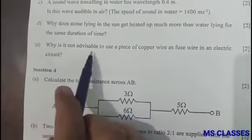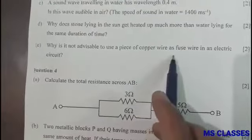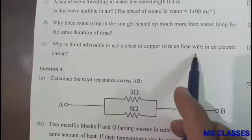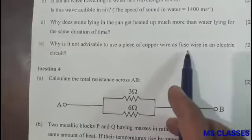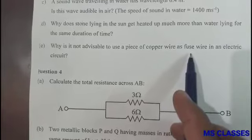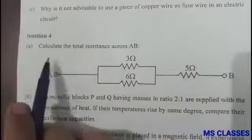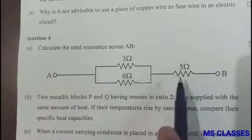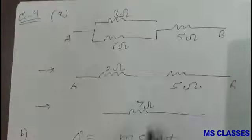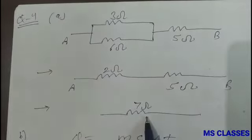Part (b): Why is it not advisable to use a piece of copper wire as fuse wire in an electrical circuit? Because of high melting point, it will not melt easily when high current passes through it and may damage the electrical appliances. Part (c): Calculate the total resistance across AB. This is how we find 7 ohm.